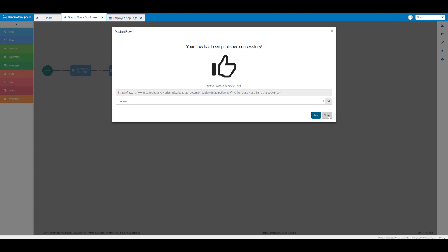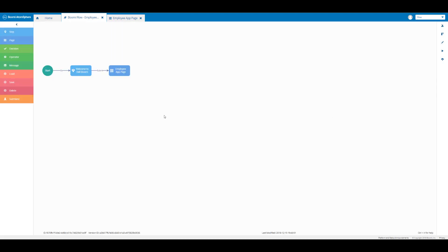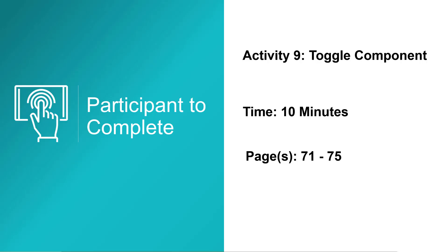We can close our app, return to the platform, and close out the publish flow window. That brings us to the end of activity 9. You may now take approximately 10 minutes to complete activity 9 using your activity guide, referencing pages 71 through 75.